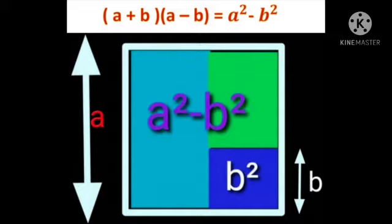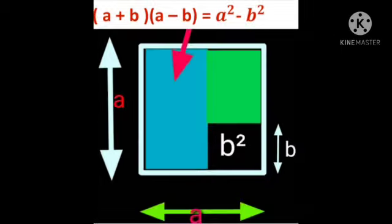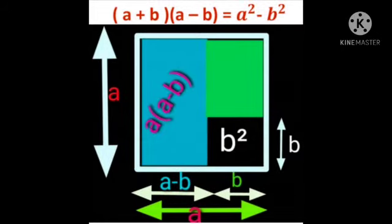We need to prove that a² - b² = (a+b)(a-b). To prove that, we are going to divide the shaded portion into two portions. First, I am finding the area of the blue portion shown by the arrow, whose length is a units and breadth is (a - b) units, since we subtract b from the total length a. So the area of the blue portion is a × (a - b).